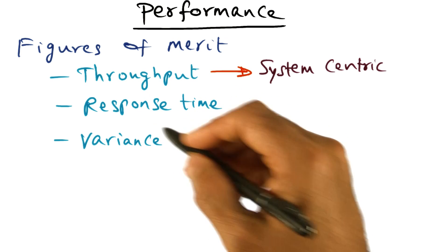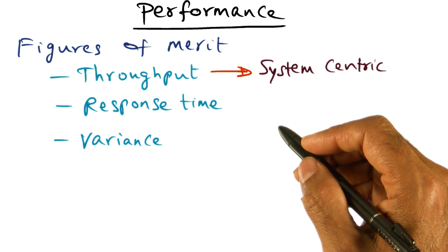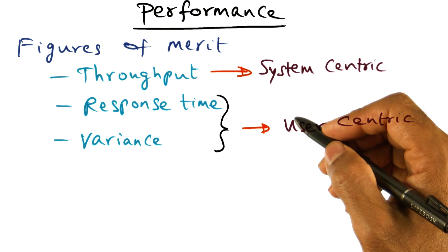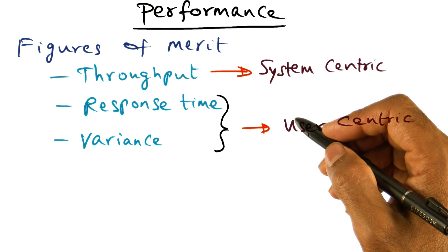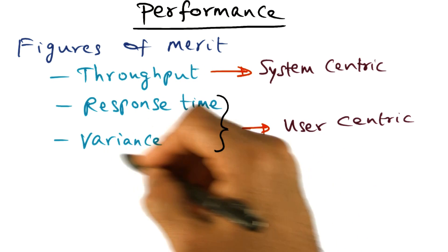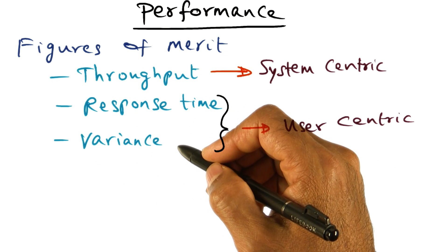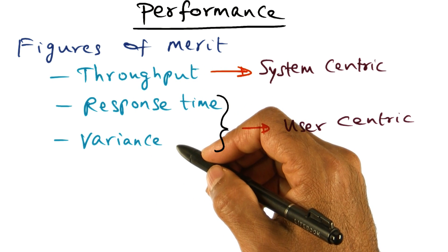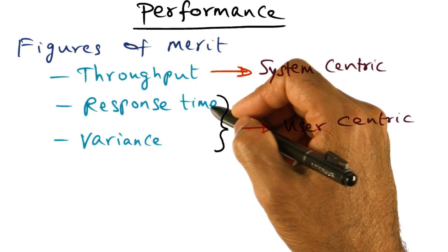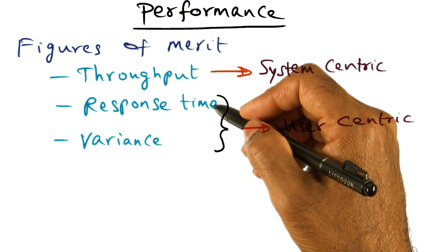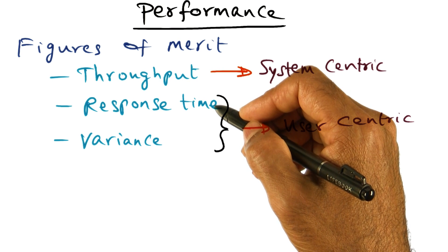The next two metrics are user-centric metrics. Response time is asking: if I start up a thread, how long does it take for that thread to complete execution? And variance of response time is asking whether the time it takes for me to run my particular thread varies depending on when I run it on the system.